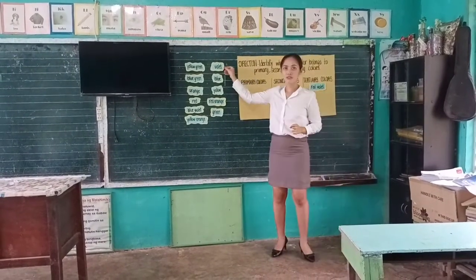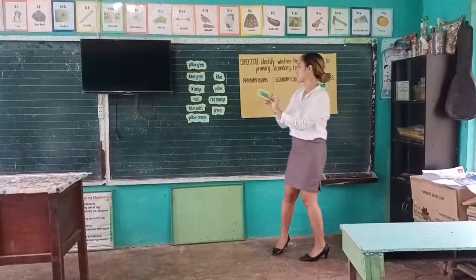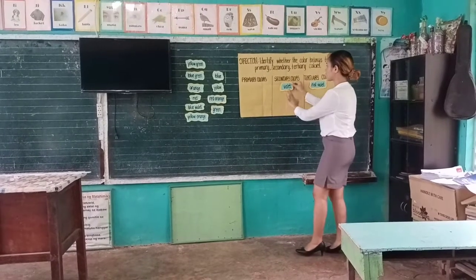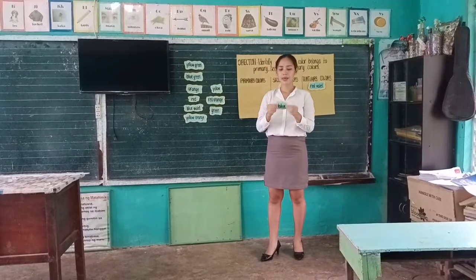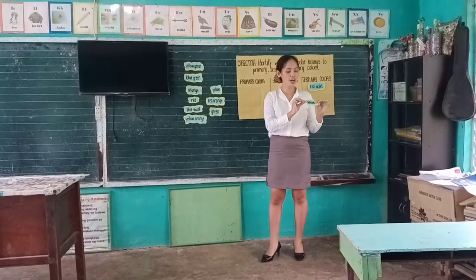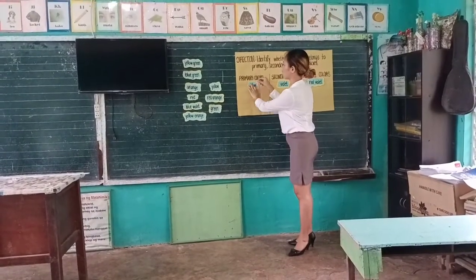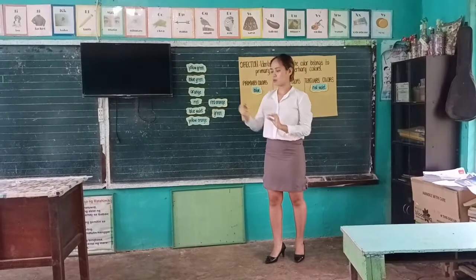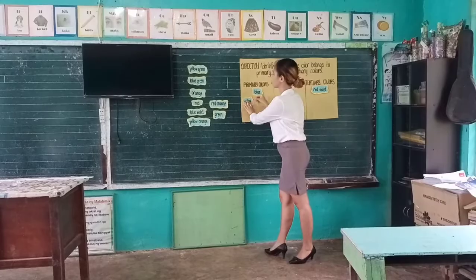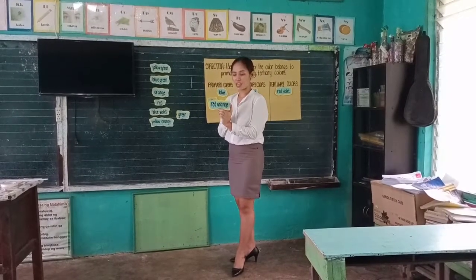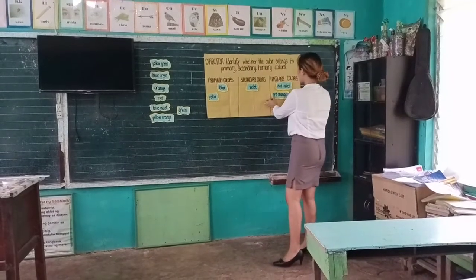How about the violet? Anyone from grade 3? Yes. Violet belongs to secondary colors. So, how about blue? May I hear from grade 4? Yes, very good. Blue belongs to primary colors. How about yellow? Yes, yellow also belongs to the primary colors. So, how about the red-orange? Very good. Red-orange belongs to the tertiary colors.